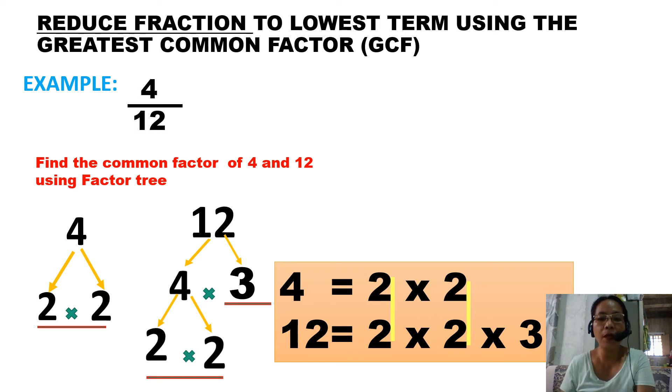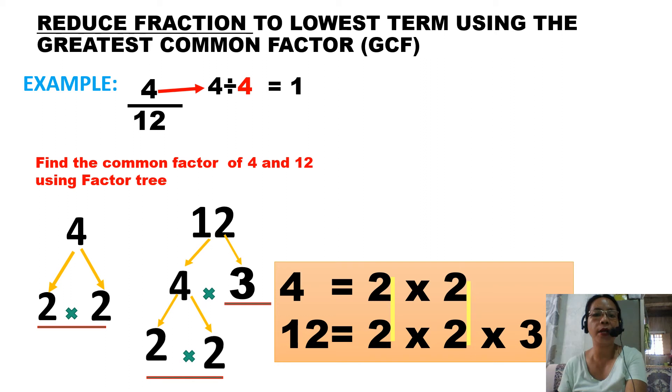So those two matching 2s, multiply them to get the factor to use as divisor to reduce 4/12. We have 2 × 2. Let's multiply these common 2s. 2 × 2 equals 4. So we will use 4 as our GCF. Therefore, divide 4/12: 4 ÷ 4 = 1, then 12 ÷ 4 = 3. So for 4/12, the lowest term is 1/3.